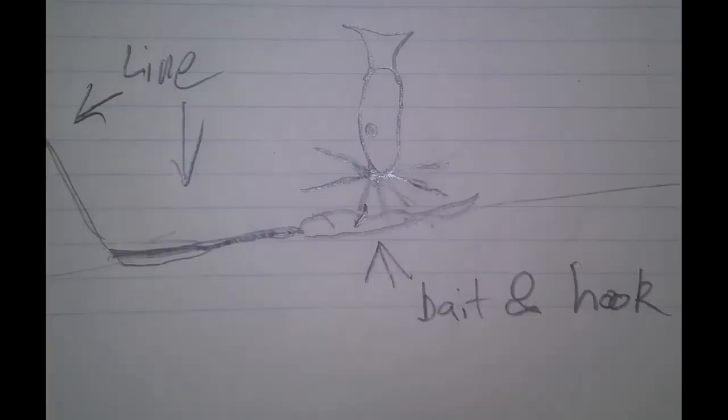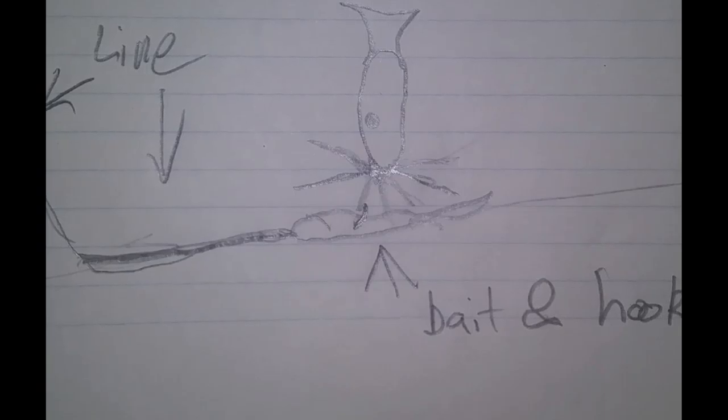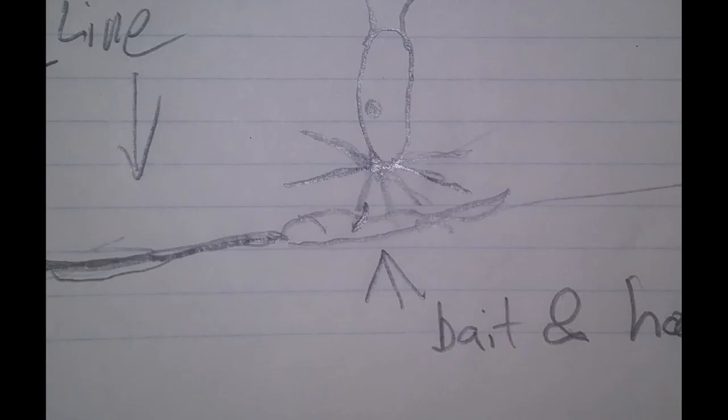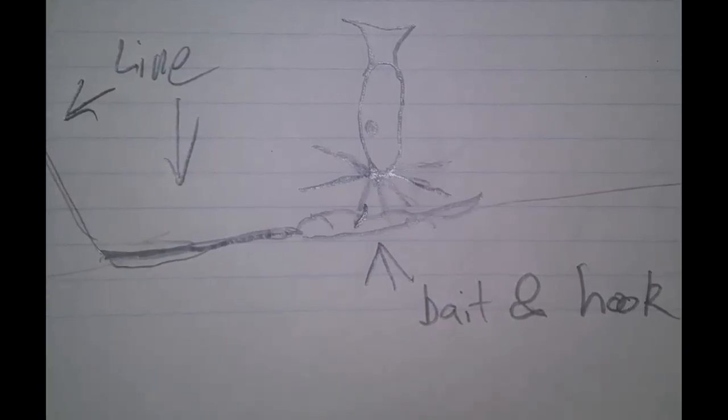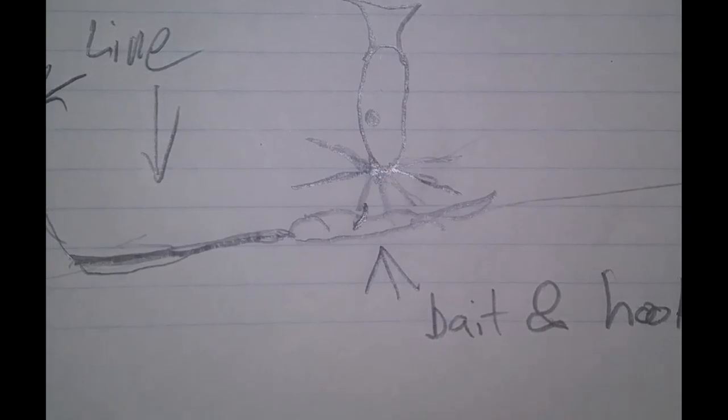So I got to thinking it would probably be better if you had a weighted leader line or something, and then that would lay down flat. And that way the whiskers wouldn't bump into it and detect it, and give you a better chance of it maybe taking the bait.